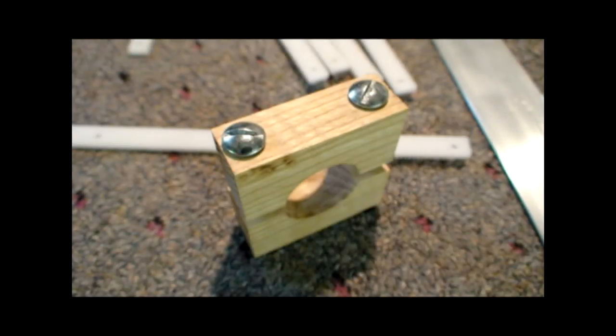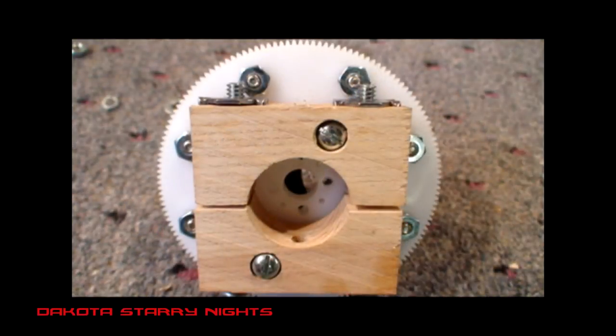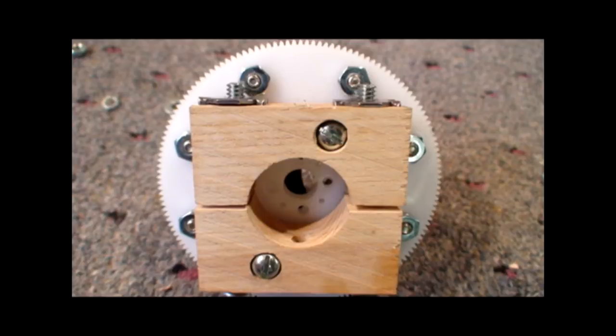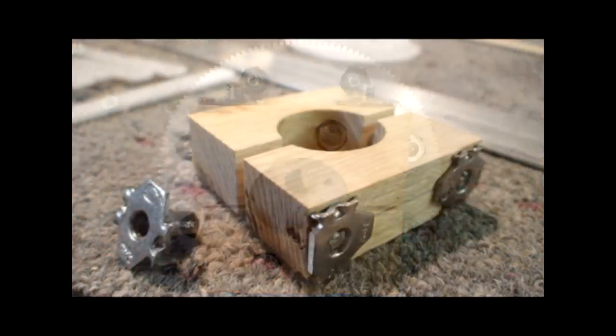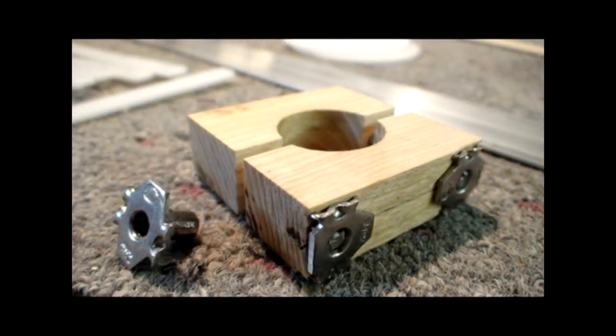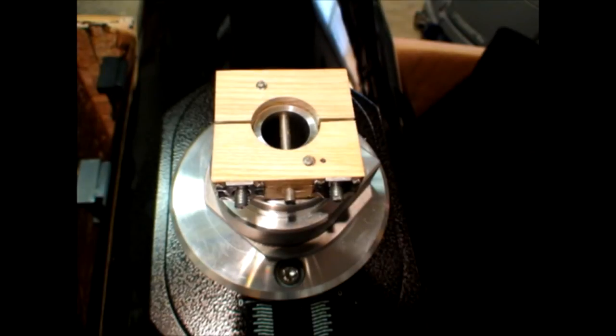The first thing you'll need to construct is the clamp block used to attach the altitude gear hub to the altitude bearing on the Zimmel telescope. For this I used a piece of ash, but any hardwood will do. Then attach the block clamp to the telescope's altitude bearing. This shows the block attached with a lock pin through the telescope altitude bearing and clamp block.